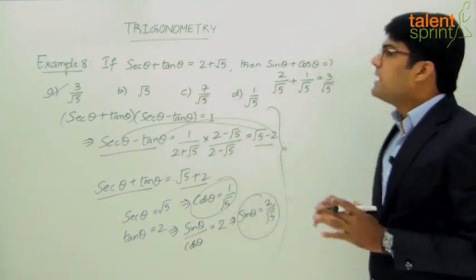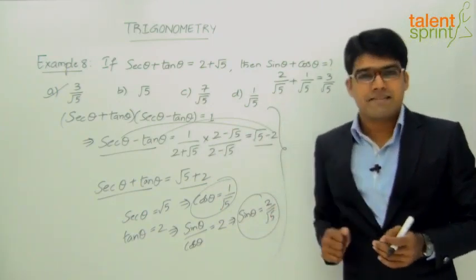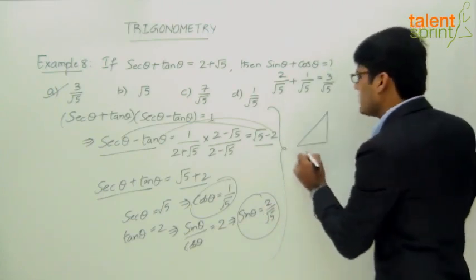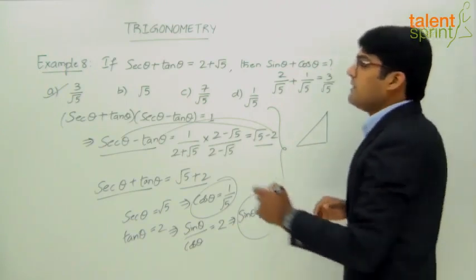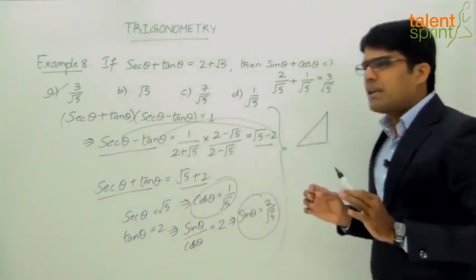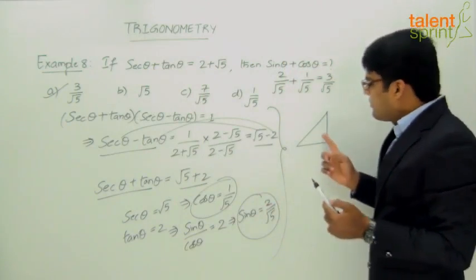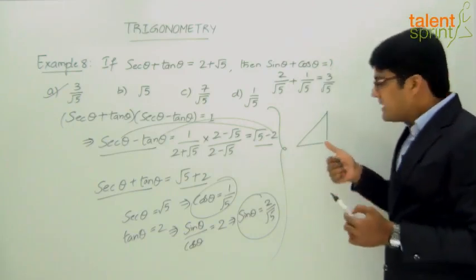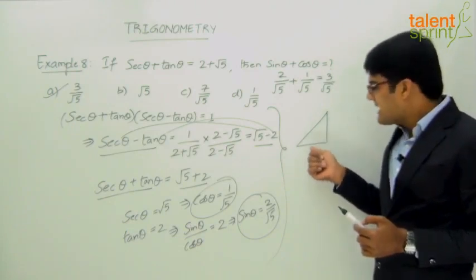If you are quick and smart in calculations, you can also use the right angle triangle approach, as done in earlier examples. All trigonometric ratios are ratios of different sides of a right triangle. We have secant theta plus tan theta equals 2 plus root 5, and we look for a Pythagorean triplet that fits.